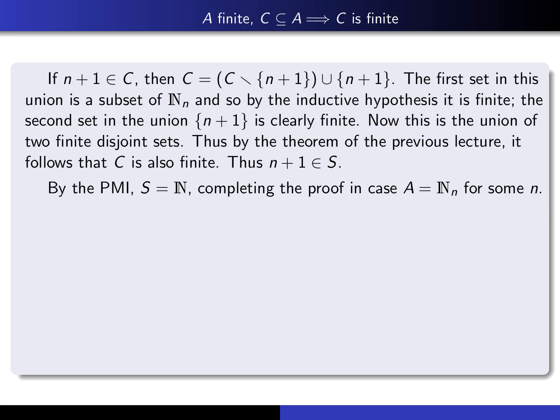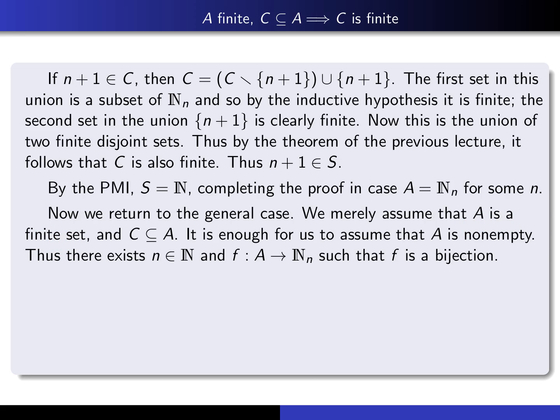Now we have to go back to the general case: A is any finite set and C is a subset of A. Without loss of generality, we can assume A is non-empty, because if A is empty then C is also empty and that's finite. Since A is non-empty and finite, there exists a natural number N and a bijection F from A into N_N. To use the case we've just proved, we want to take our subset C of A and produce a subset of N_N with the same cardinality as C.